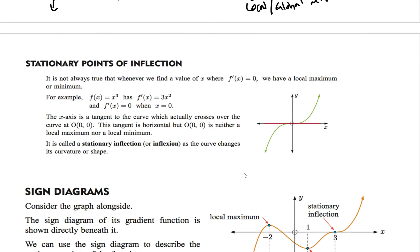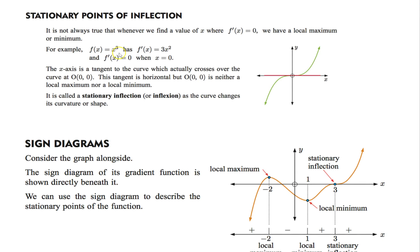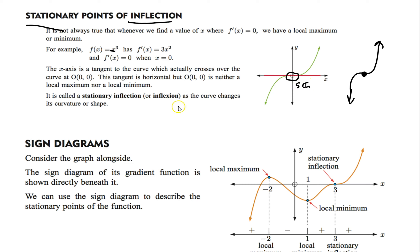Let's talk about a stationary inflection. Think of the x³ graph — it goes up, then levels out for a second, and goes up again. Anytime your graph does that, we call it a stationary inflection. Same idea going down: it goes down, then after a brief pause where there could be a horizontal tangent line, it goes down again. That's a stationary inflection. So your three options are: local max, local min, or stationary inflection.